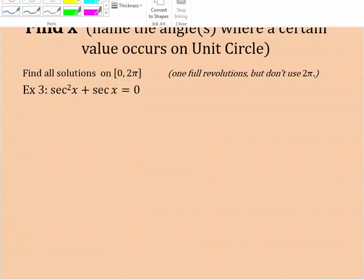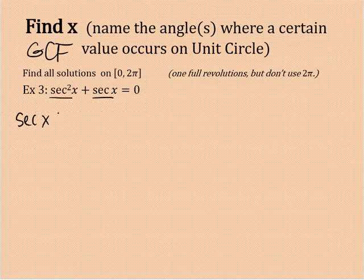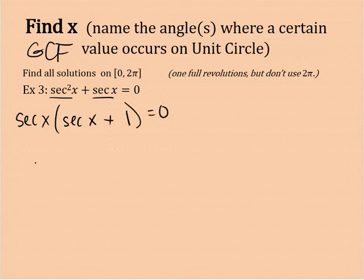Let's try one more. Secant squared plus secant x. Okay, greatest common factor. It's the name of the game today. What do they have in common? Hopefully you see that it's a secant. So I'm going to take a secant out of the first term. Divide it out. You have a secant left. Secant out of the second term. Dividing it out, I have a 1. So set each part equal to 0.